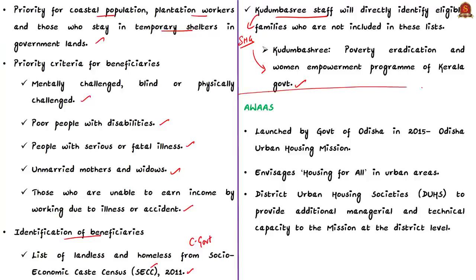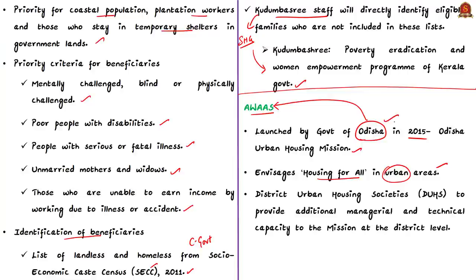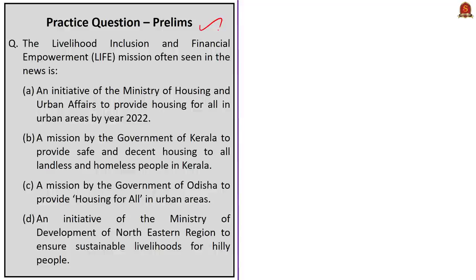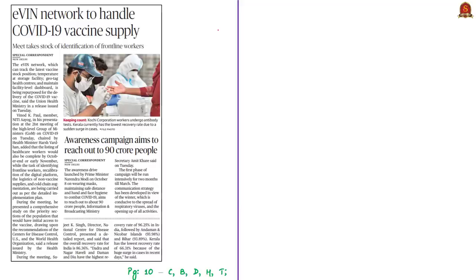In this context, also note that the Government of Odisha has launched the Odisha Urban Housing Mission known as AWAS in 2015, which envisages housing for all in urban areas. This is all about the LIFE Mission of Kerala state and the AWAS Mission of Odisha state.